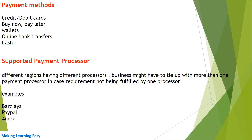Not every payment gateway will offer all these payment methods — some might offer just two, some might offer all five, some might offer three. You need to check before selecting a payment gateway. Regarding supported payment processors: the merchant integrates with the payment gateway, sends payment details, and the payment gateway integrates with the downstream system — the payment processor — and forwards the request for further processing.